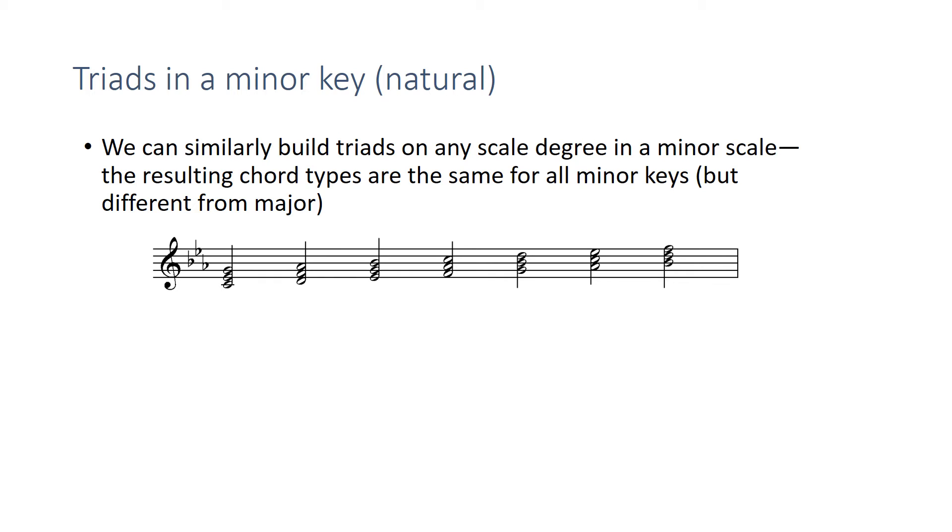So here we have C minor, and I've built triads over each one of the scale degrees. And if you look at the quality of each one, we have C, E flat, G, so the one chord is minor. D, F, A flat, the two chord is diminished. E flat, G, B flat, which is a major triad, so major three.